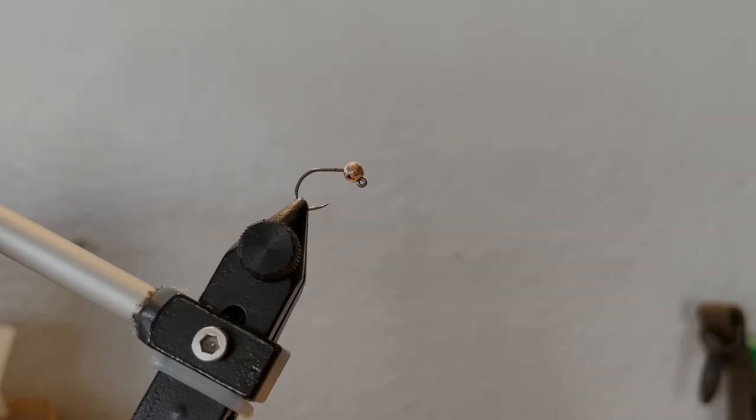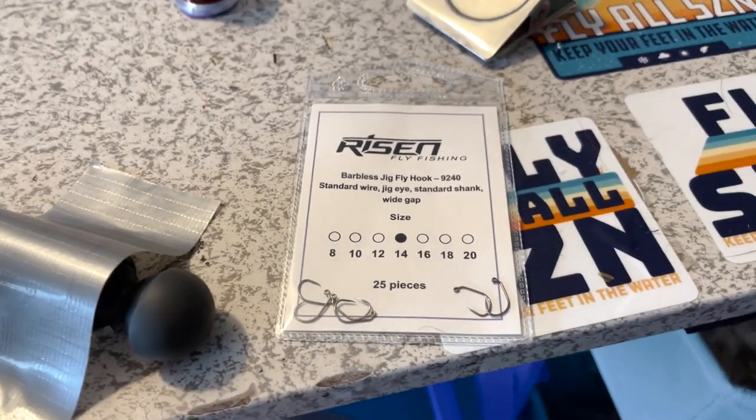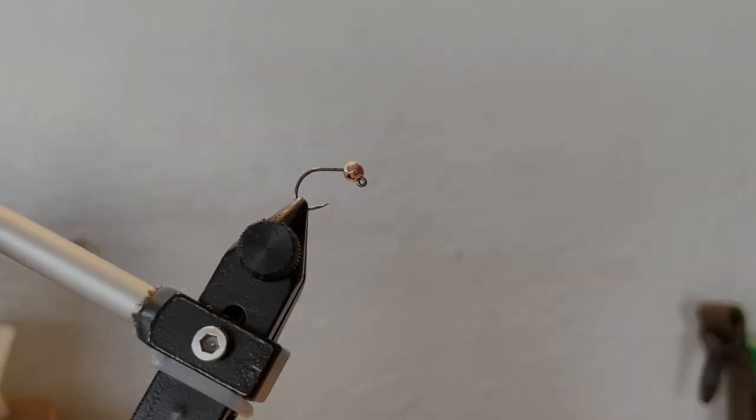All right, today we are tying an October caddis nymph. I love to run this one under a dry for a dry dropper in October, late September. It's super simple to tie, so I'm not afraid to lose it, and fish seem to love it. To start, we've got a Rizen barbless jig hook size 14 with a 3.5 slotted tungsten bead in copper.